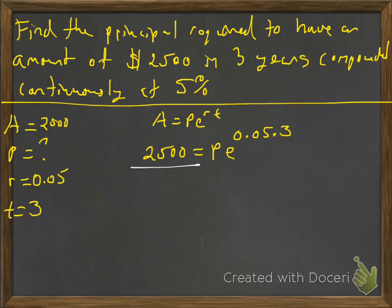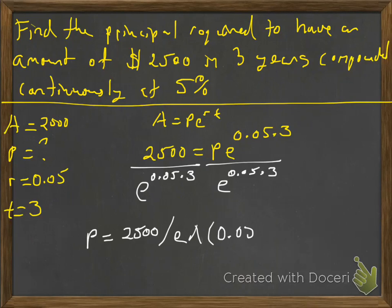And so we're going to know what E to the 0.05 times 3 is. We're going to have to plug it into our calculator, and it's going to be multiplied by the P. So we're going to divide by it, we're going to divide both sides by that. And I'll show you what it looks like in the calculator. So it's going to be 2,500 divided by E carat 0.05 times 3. And that's going to be approximately $2,151.77. So that's how much I'm going to need to deposit now so that three years from now I'll have $2,500 in my bank account.